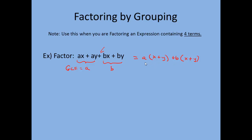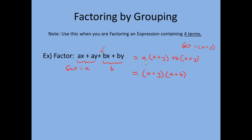Once we're here, we've got two terms: a times (x plus y) and b times (x plus y). They have an x plus y in common — that's the GCF between the two terms. So we're going to factor x plus y out to the front, and then our second set of parentheses has whatever's left over, which is a plus b. What matches? x plus y — that goes in front. What's left over? a plus b — that goes in the next parentheses. We've factored it; the two binomials are multiplied together.